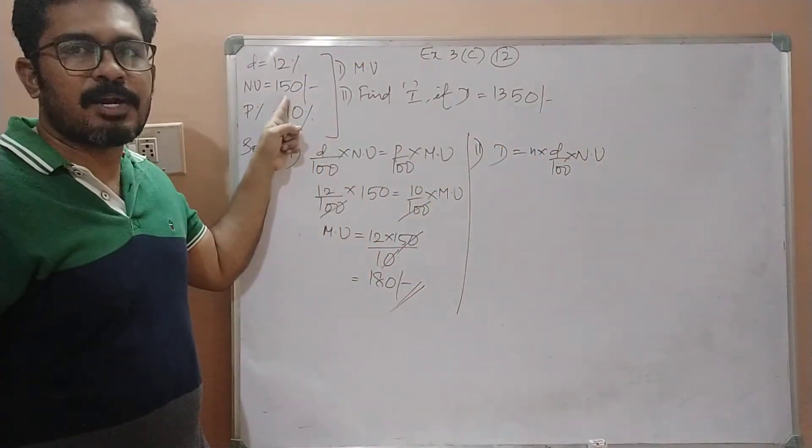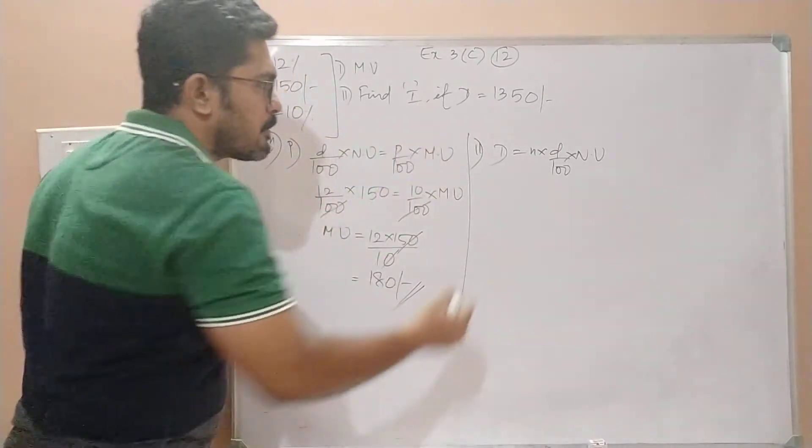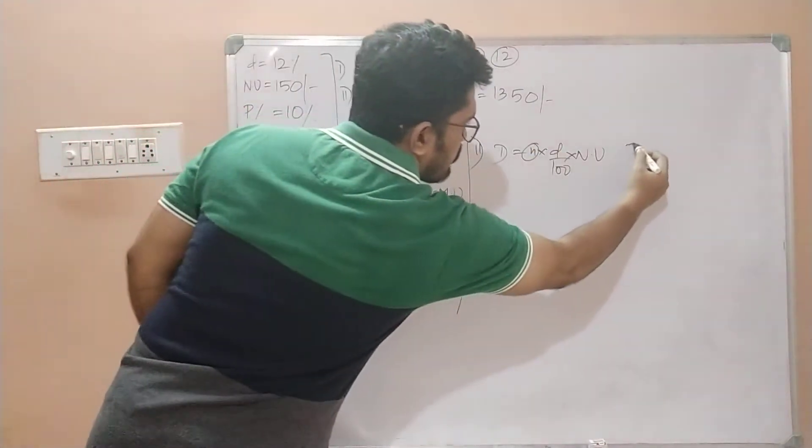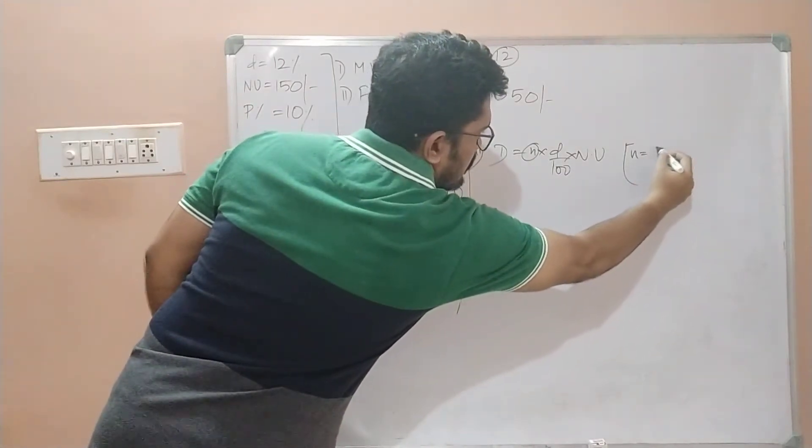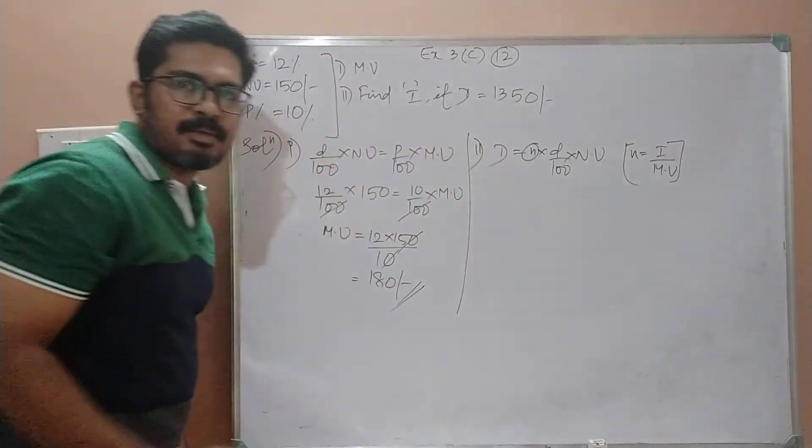The nominal value is also given, 150. We need to find the investment. So remember, we can write n as the investment made divided by the market value. Isn't it? How do we find the number of shares that you buy in a company?